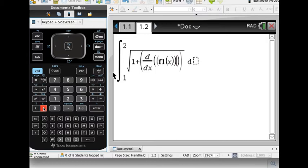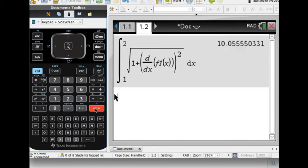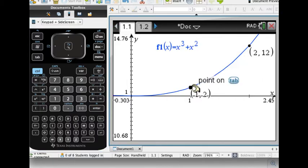Okay, get outside that, close that off and square it. So I have the square root of 1 plus the derivative squared dx. And I end up with about 10.05, 10.06-ish units. So that would be the length from here to here.